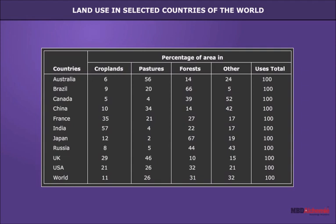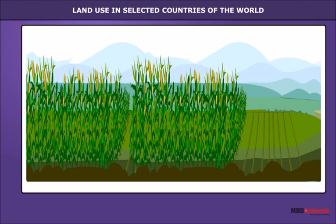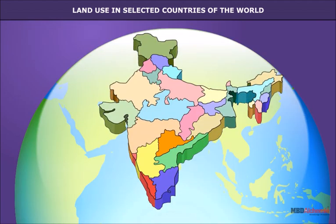Land use in selected countries of the world: According to Table 1, many important inferences can be drawn. For example, India has a very high percentage of arable land — 57%. Australia and UK have more land under pasture. A small country like Japan has 67% of its total land area under forests. Canada, which has a good percentage of its land area under forests, has put its land area to other uses. The above land use pattern also reveals the probable economic activities of the people. For example, agriculture is the dominant occupation of the people in India.